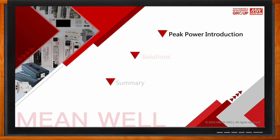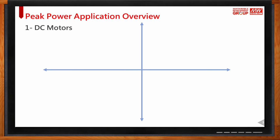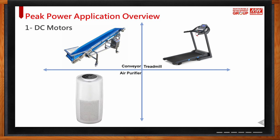As you can see in slide two, first I'll cover the peak power introduction, second I'll go over the solutions. Peak power applications require high power at startup, which can cause the power supply to fail if it has no peak power capability. One of the most common peak power applications is motors — used in treadmills, conveyors, and robotics. Those motors require huge current at startup, equal to five to eight times the rated output current.